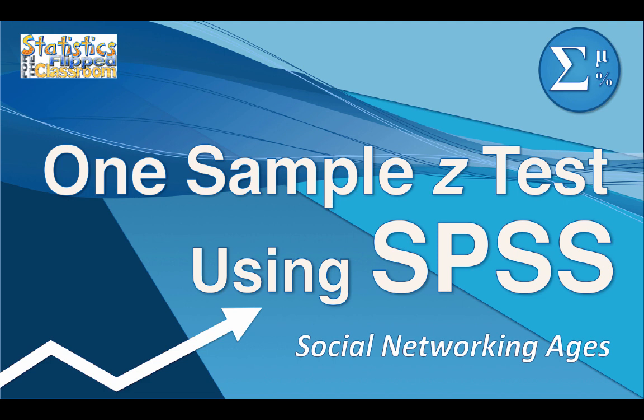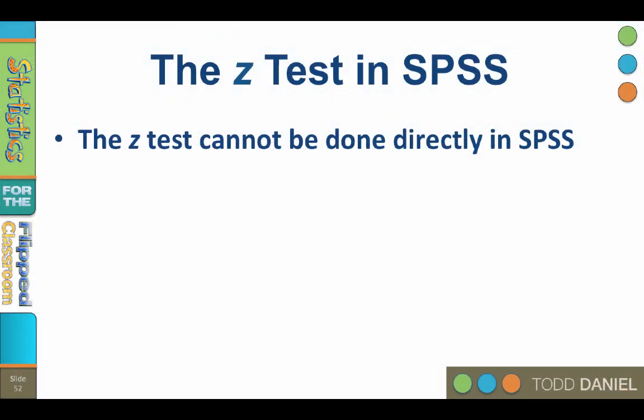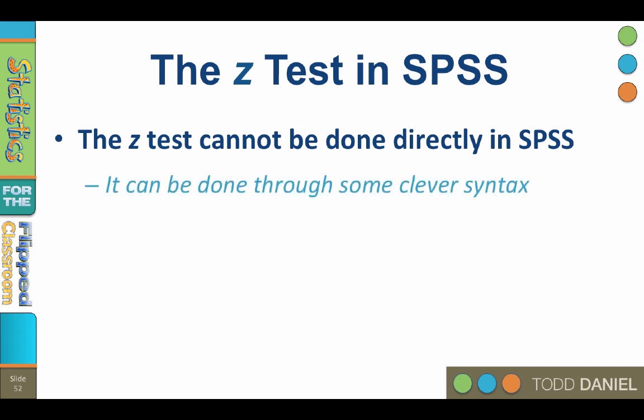You may be wondering how to conduct a one-sample z-test in SPSS, and the answer is not easily. The z-test cannot be done directly in SPSS — you cannot do a z-test with the SPSS drop-down menus. On the other hand, z-tests are math, and SPSS does math, so conducting a z-test in SPSS is not outside of our abilities. We just need to write some clever syntax.